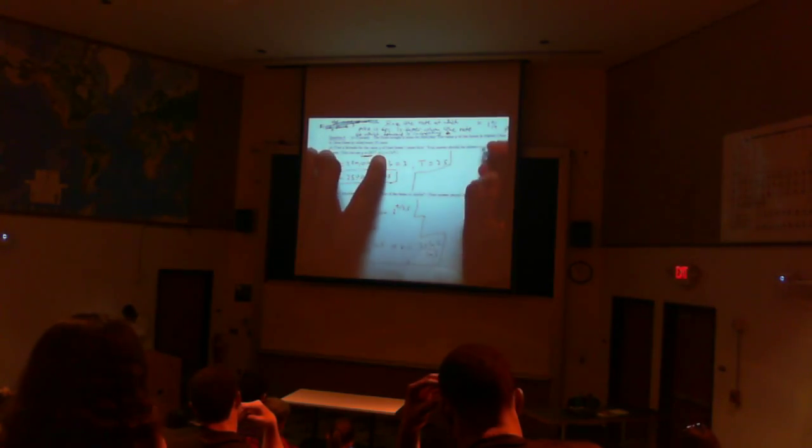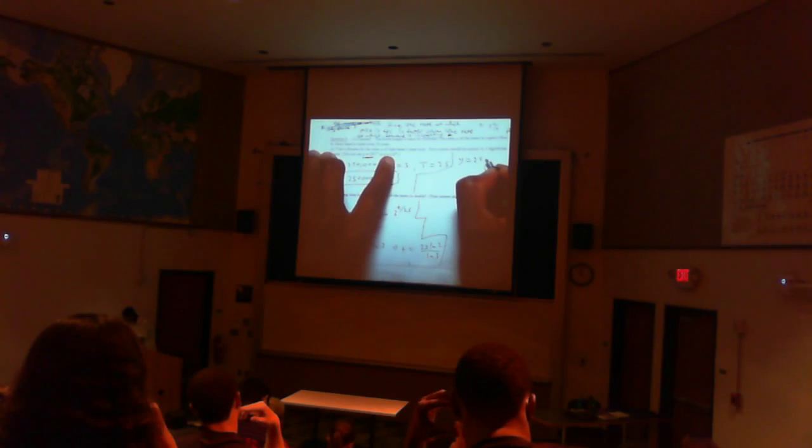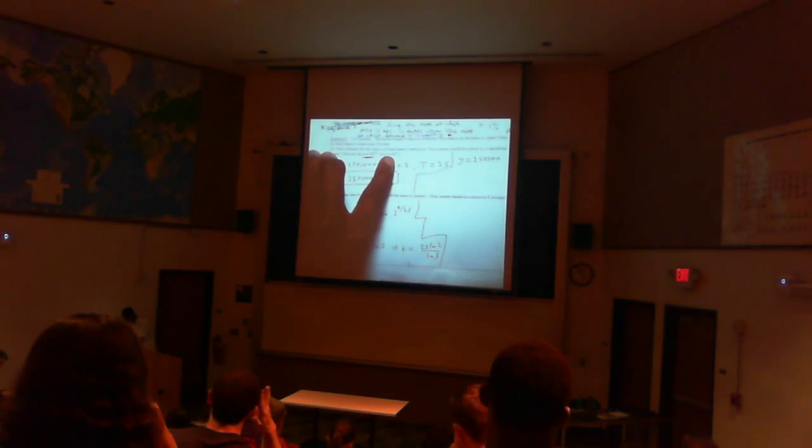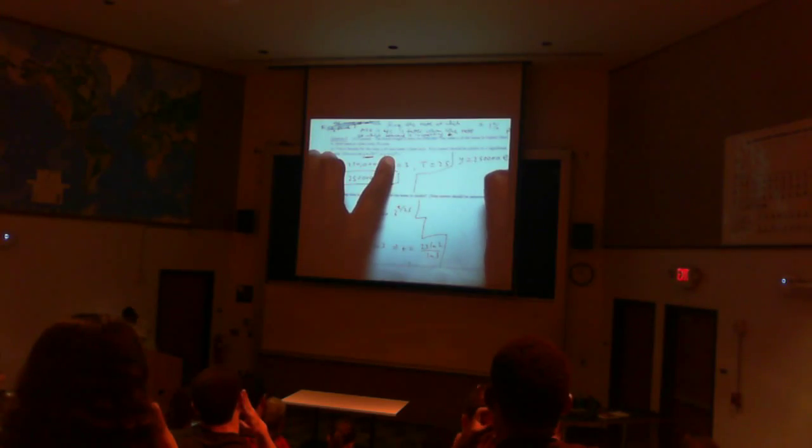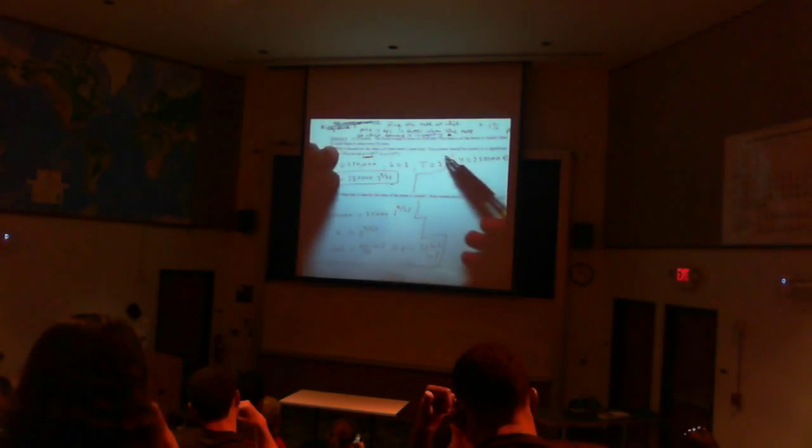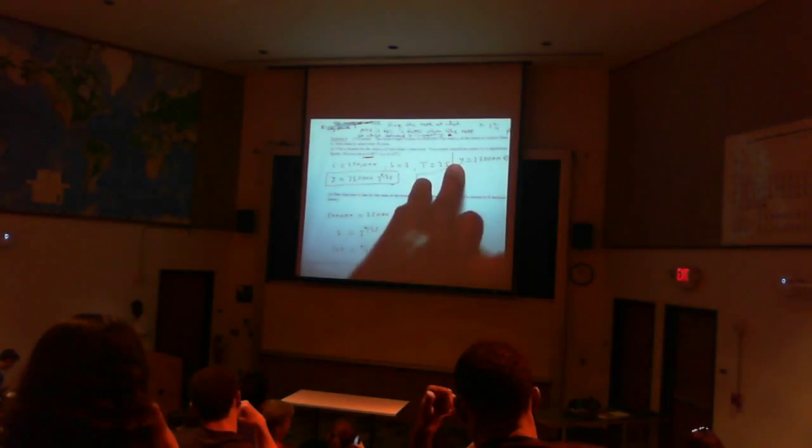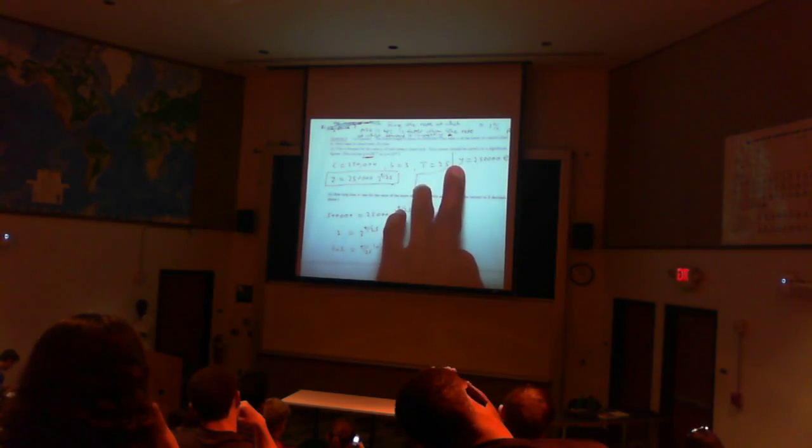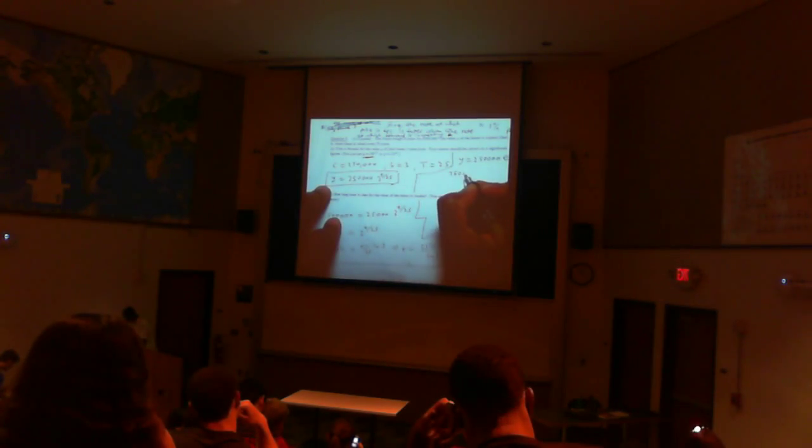Now if you decide to use the other model, you have y equals c times e to the kt. So that's 250,000 times e to the kt. Then you would have to find the value of k by using the information given. We're told that when t equals 25, y is going to be 750,000, right? Because the value triples. So when t equals 25, 750,000 equals 250,000 times e to the 25k.